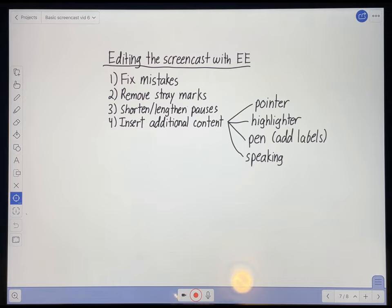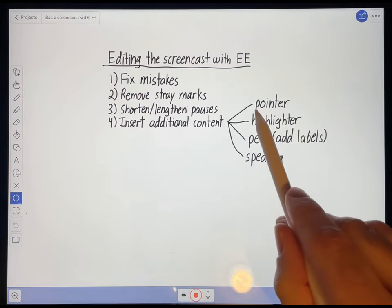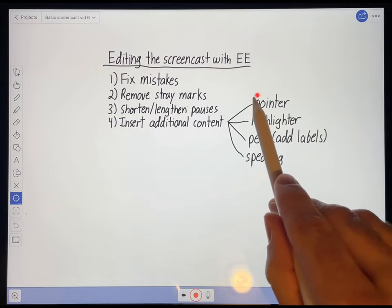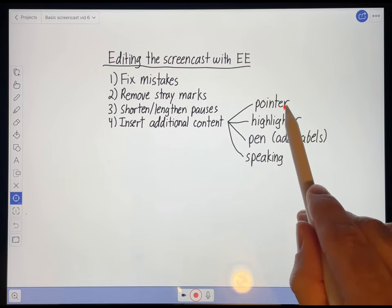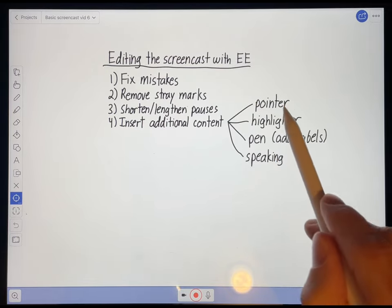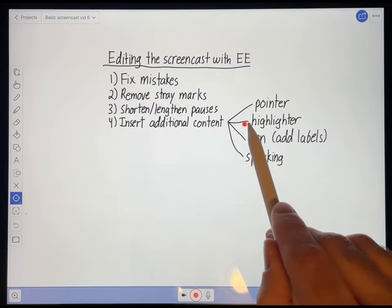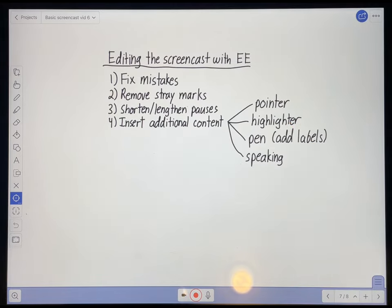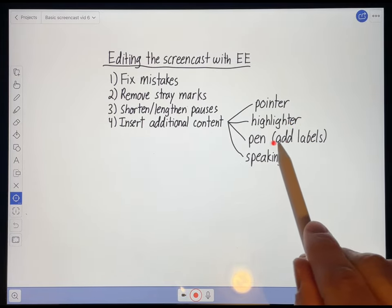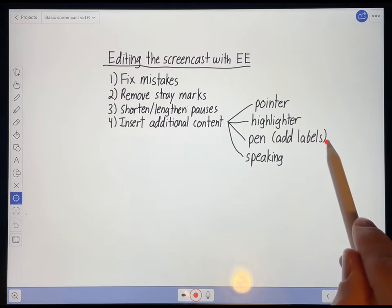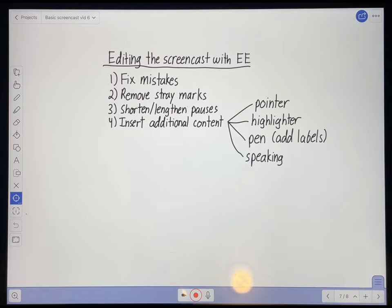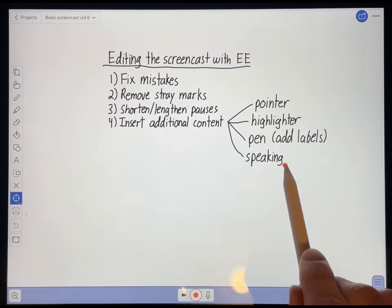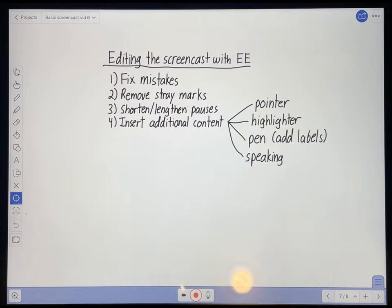For example, if you wanted to emphasize something, you can use the pointer, and you can also use the highlighter for the same reason. You can use the pen to add any labels. And you can even insert your voice at any point in the recording.